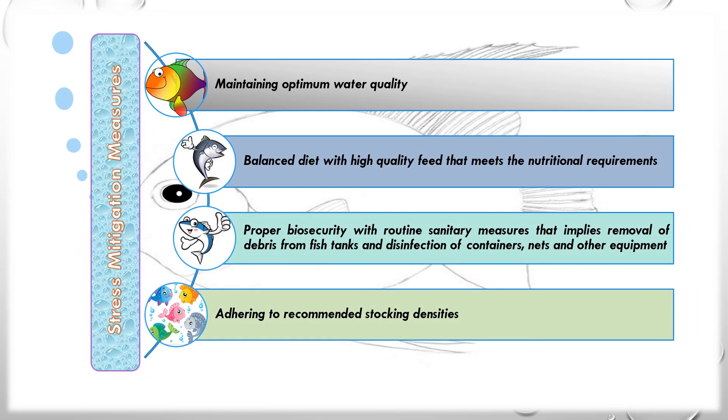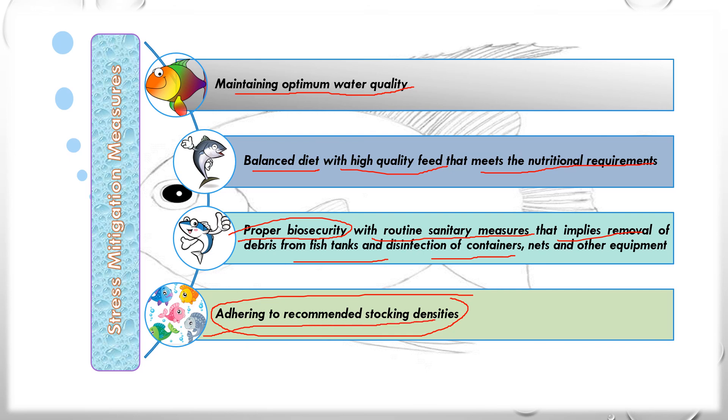So what are the stress mitigation measures? Stress mitigation measures can be done to inhibit the acute stressors, such as through maintaining optimum water quality, by providing balanced diet with high quality feed that meets the nutritional requirements of cultivable finfish. Next, proper biosecurity with routine sanitary measures that implies removal of debris from fish tanks and disinfection of containers, nets, and other equipment. And last but not least, a farmer must adhere to the recommended stocking density.